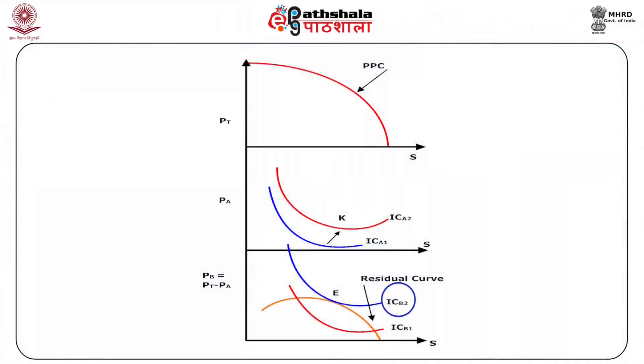Further, tastes of the consumers are given — that is, we have the utility map of Mr. A as well as Mr. B. To show efficient allocation of a social good in general equilibrium framework, first we select a given level of utility for individual A, depicted by his indifference curve ICA. Subtracting it vertically from the transformation curve, we get another curve known as the residual curve or consumption curve for B. This consumption curve will reveal the maximum private good available for B given A's utility level. Out of various options of private good available for B, B will choose that point where the residual curve touches its highest indifference curve. ICB2 is that indifference curve and E is the equilibrium for B.